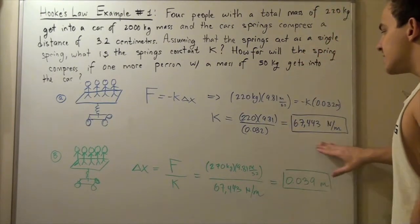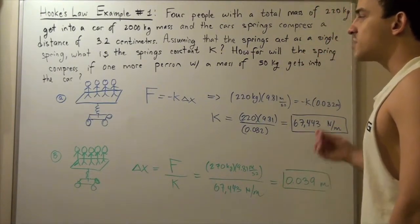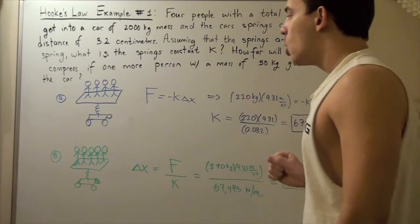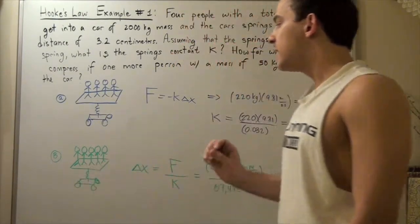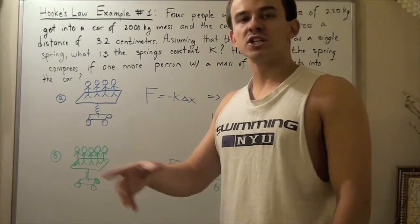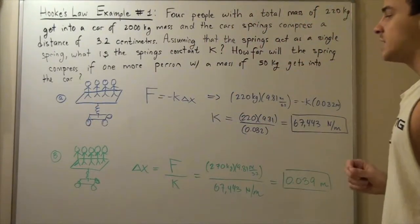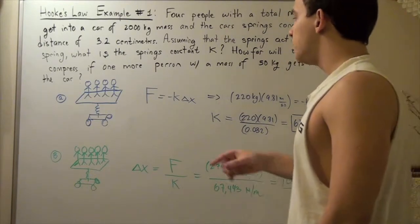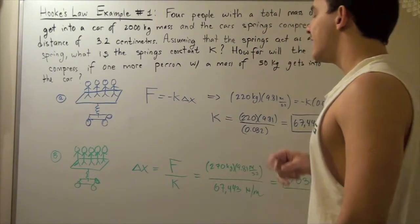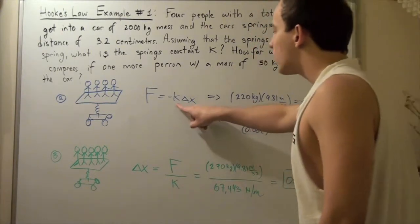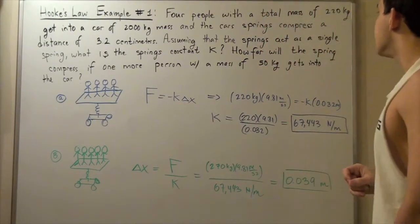So knowing the spring constant of our spring, we can solve part B. In part B, we have one more person get into the car and that person's mass is 50 kilograms. So now we simply use Hooke's Law once again and now we want to find our displacement or change in our spring's distance.